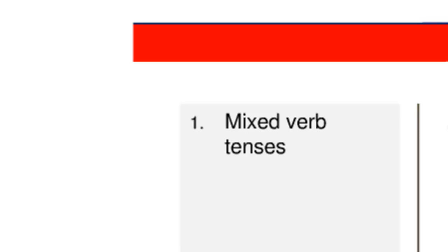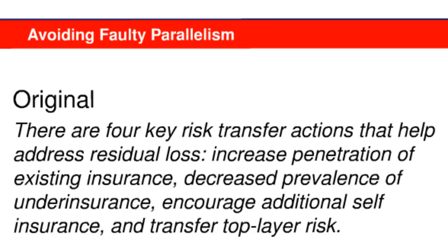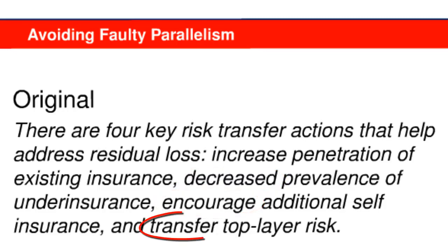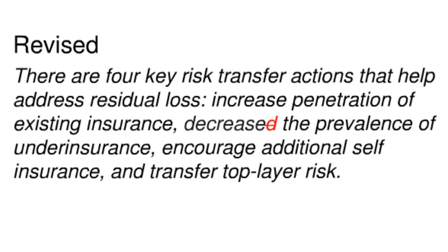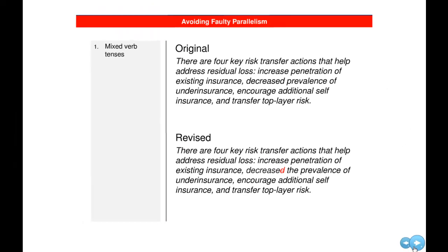The first cause of faulty parallelism is using mixed verb tenses. Look at the passage from the 2010 report shown here. There are four items listed in a series after the colon. The first begins with the present tense verb increase, the second with the past tense verb decreased, the third with present tense encourage, and the fourth with present tense transfer. The writer can revise very easily by simply removing the D from decrease to make it the same tense as the verbs in the other three items. With faulty parallelism, readers must mentally attend to two different structures as well as four different items of information. But using parallel structure means readers cognitively process the structure only once and can spend their mental energy on processing the content, which enhances reading efficiency.